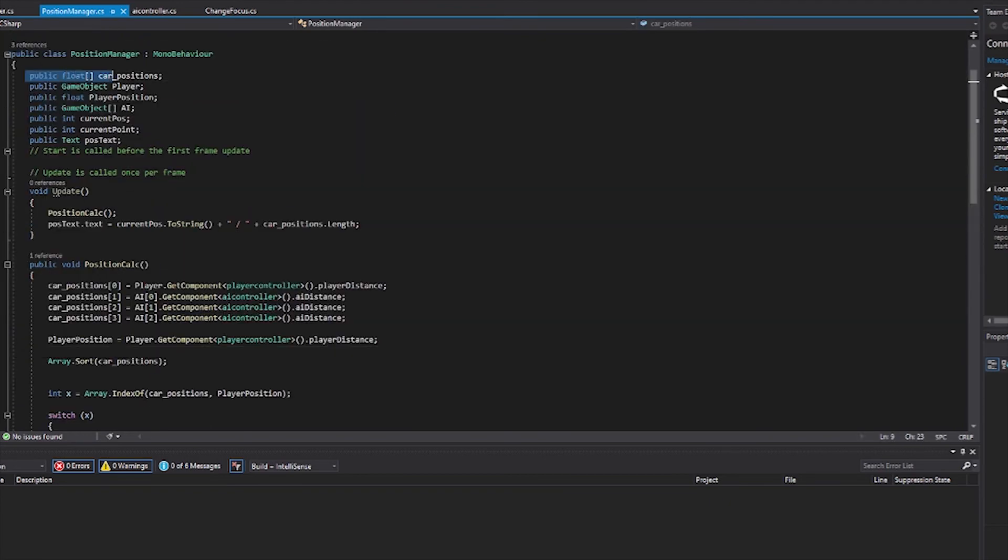First create a player manager script. Inside it there will be a bunch of variables: a float array to hold all the players' distances to the waypoint, a game object array to hold the player, a float to store the player's current distance to the waypoint, and an array to store the AI players.